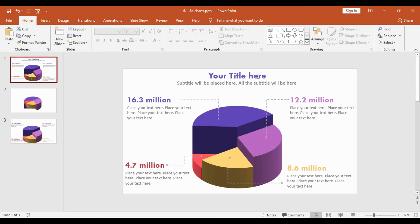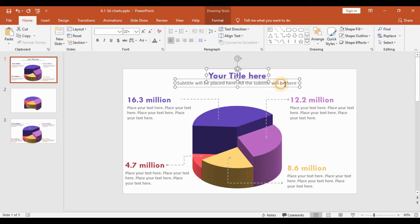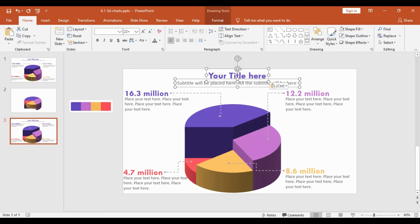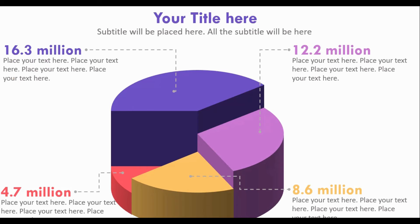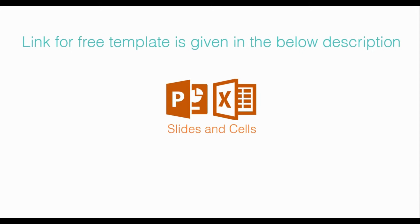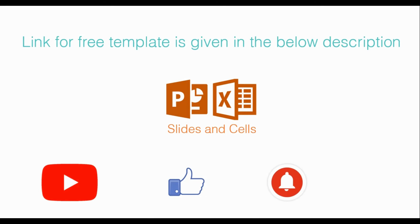All I have to do now is go to the top slide, copy the title and subtitle, come down to the final slide, and paste it. And we are done! Here it is — a beautiful 3D pie chart. Hope you enjoyed this video. Thank you for watching the tutorials from Slides and Cells. The link for the free template is in the description below. If you liked our video, don't forget to like, subscribe, and comment. See you next week!